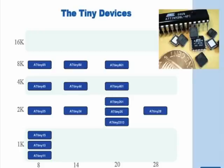Atmel AVR cores have two families: Tiny and Mega. Code written on one works on the other. Tiny parts are 28 pins and less, while Mega are larger in pin count. One key difference is that the Mega has a hardware multiplier on board, and the Tiny has the ability for self-programming Flash memory. Within the Tiny product family, devices are pin-to-pin compatible with varying Flash memory sizes from 1K to 8K.